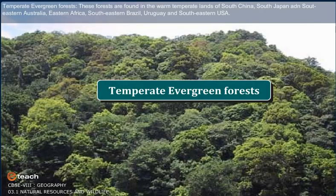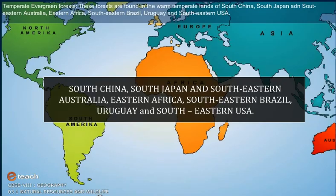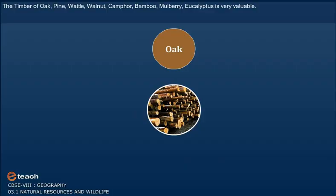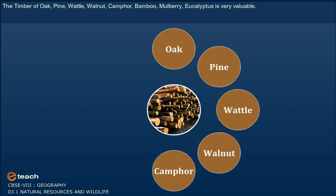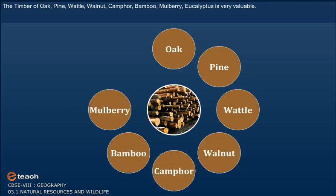Temperate Evergreen Forest. These forests are found in warm temperate lands of South China, South Japan and southeastern Australia, eastern Africa, southeastern Brazil, Uruguay and southeastern USA. The timber of oak, pine, walnut, camphor, bamboo, mulberry and eucalyptus is very valuable.